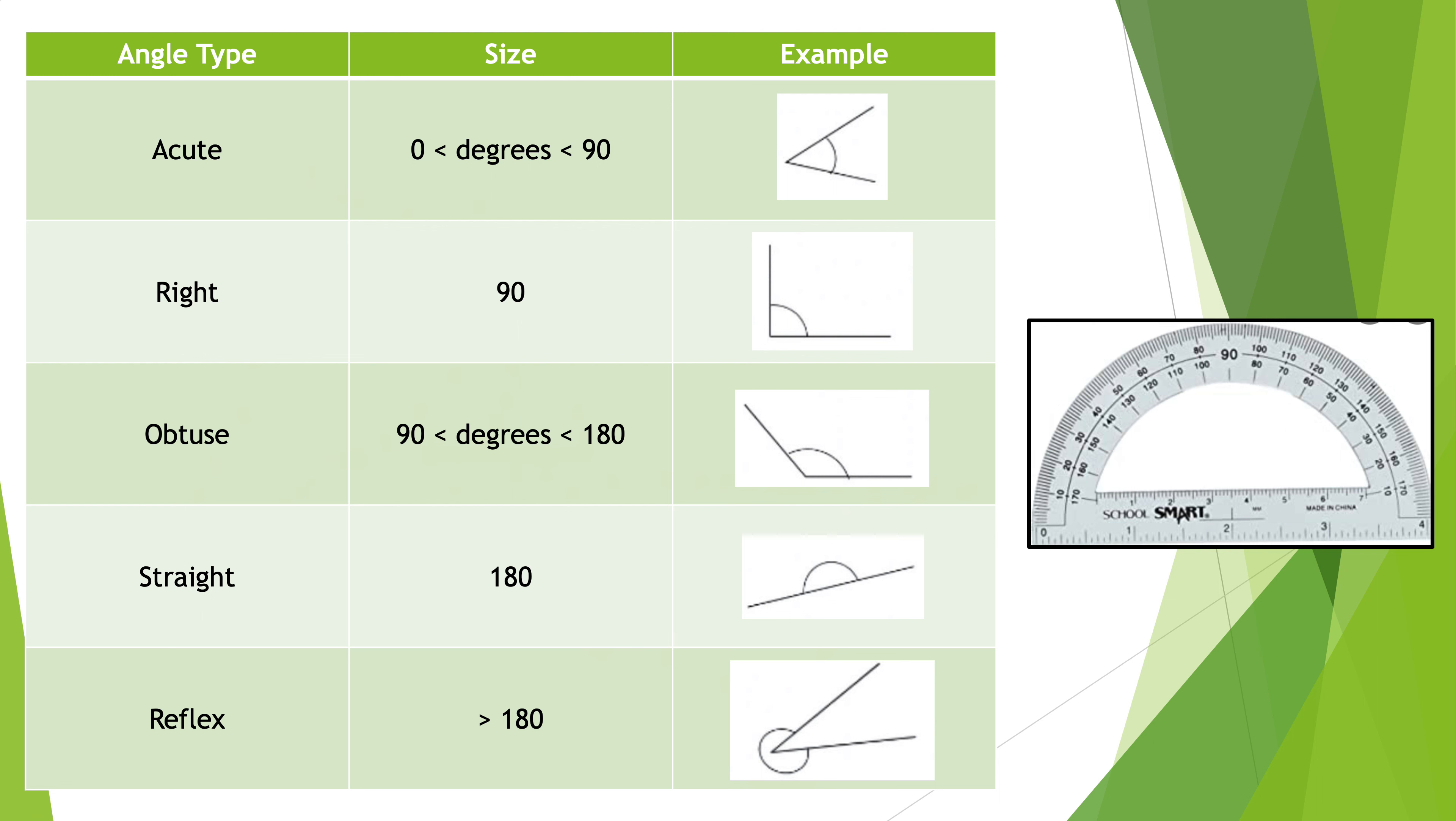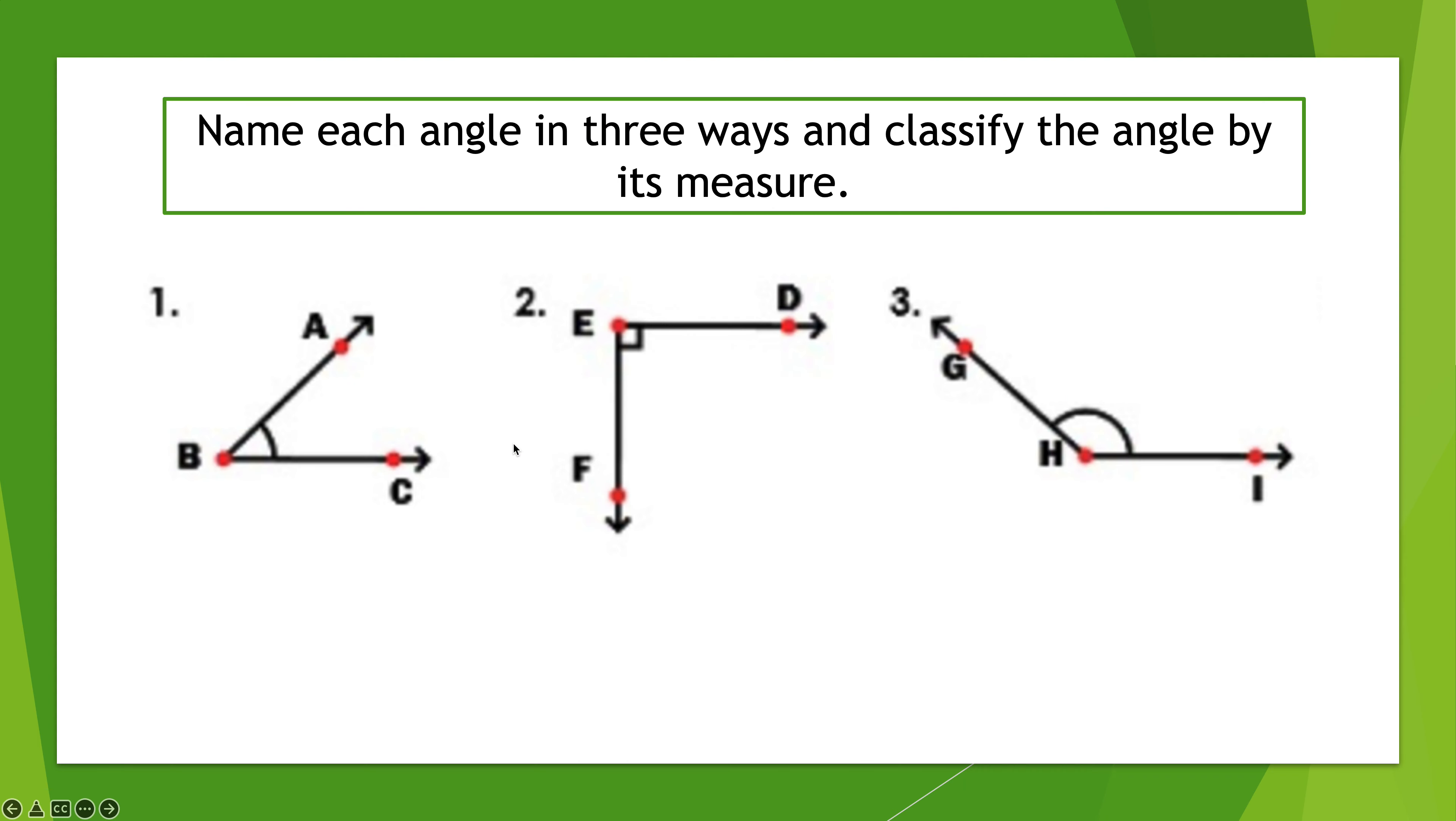So those are your five angle types. The primary ones here are acute, right, and obtuse. Straight you come across every once in a while. Reflex you rarely come across, but it's nice to know that we gave it its name.